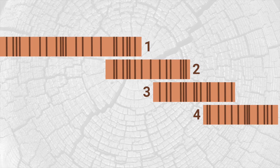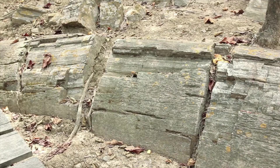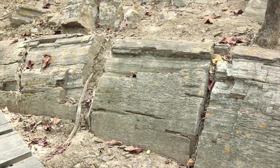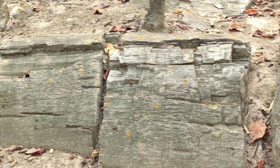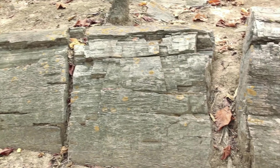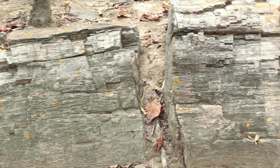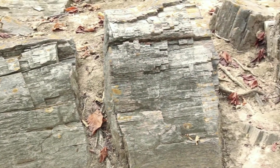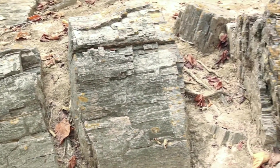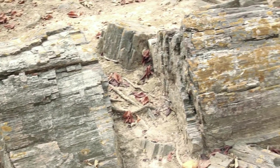Then the edge of the second one matches the center of the third one, and the edge of the third one matches the center of the fourth, and so on. This is how we can go back in time thousands of years by searching for similar patterns between the old part of one tree and the new part of another.